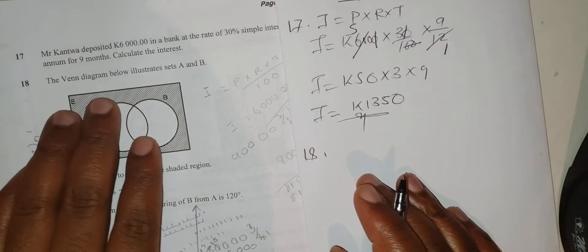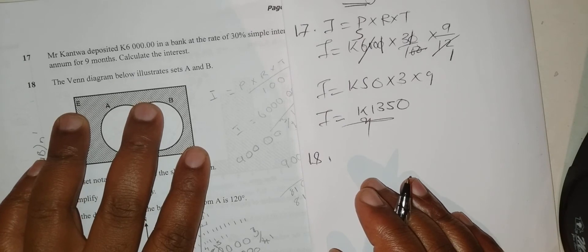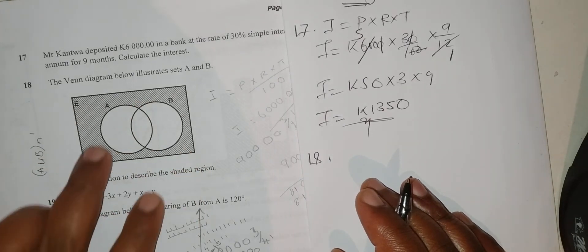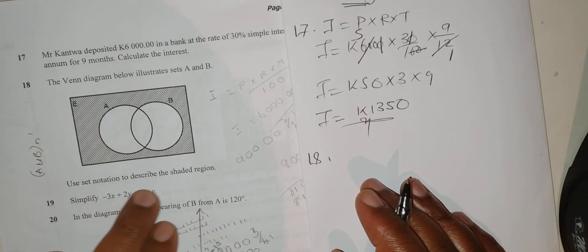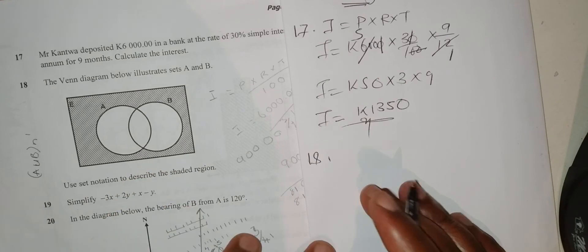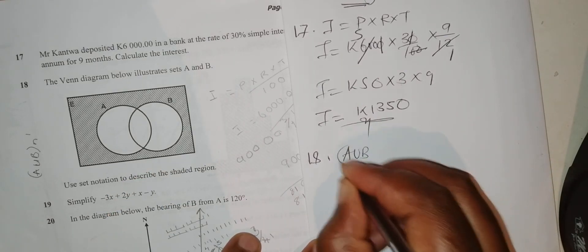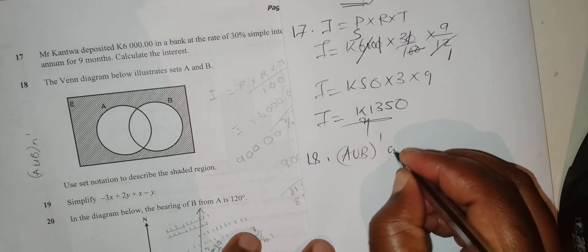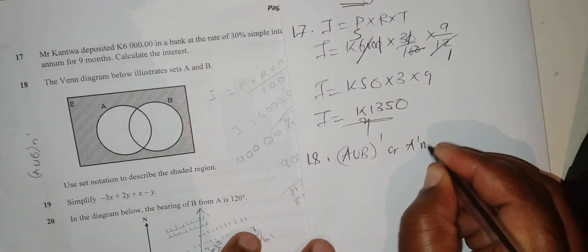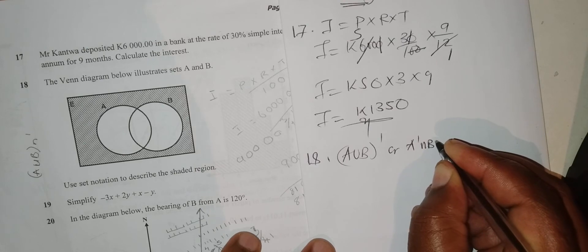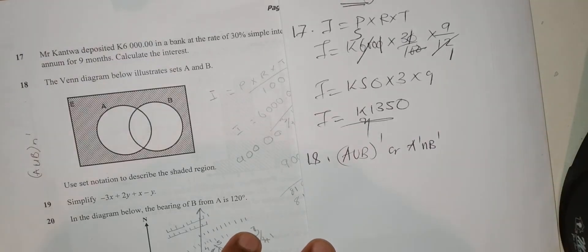Question 18: The Venn diagram below illustrates sets A and B. Use set notation to describe the shaded region. This is A union B complement, or A complement intersection B complement.